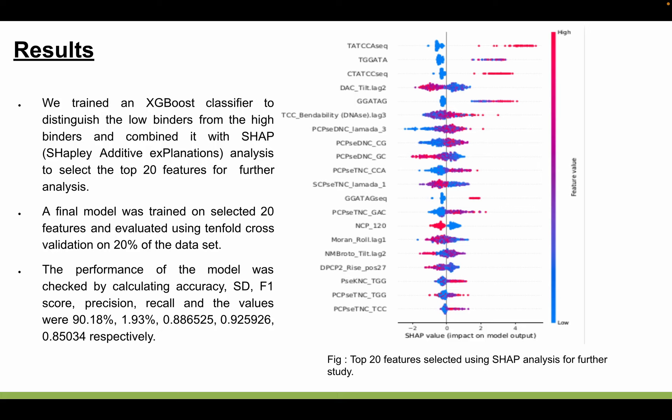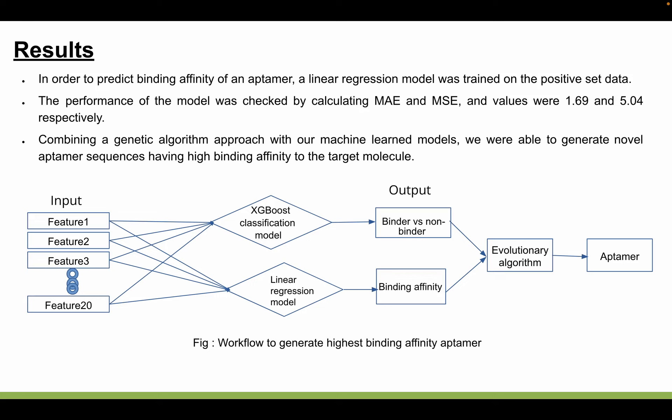The performance of this model was calculated on different parameters such as accuracy, SD, F1 score, precision, and recall. The accuracy was 90.18% and the precision was 0.93. In order to predict the binding affinity of an aptamer, a linear regression model was trained on the positive set. The performance of the regression model was calculated by MAE and MSE values; MAE was 1.69 and MSE was 5.04.